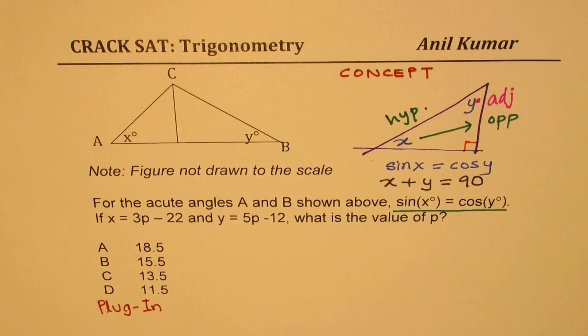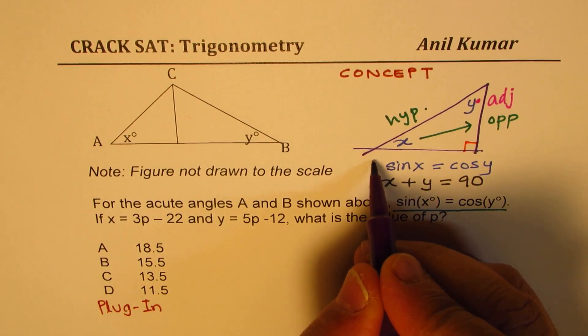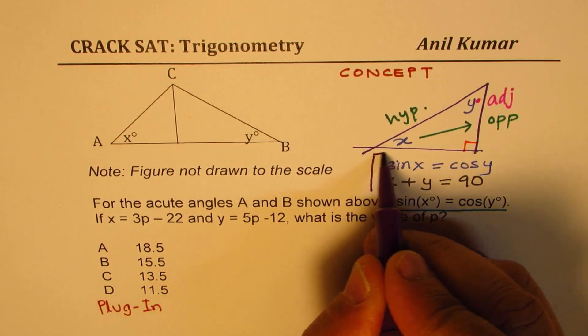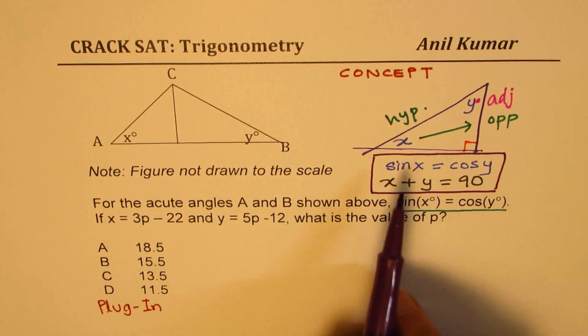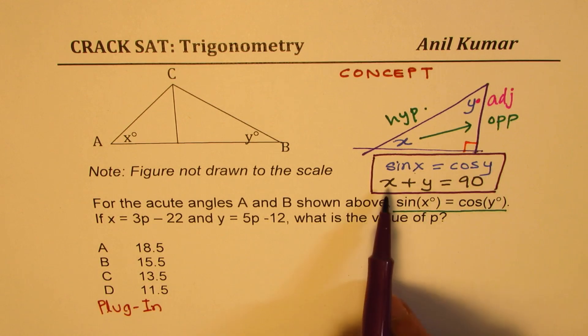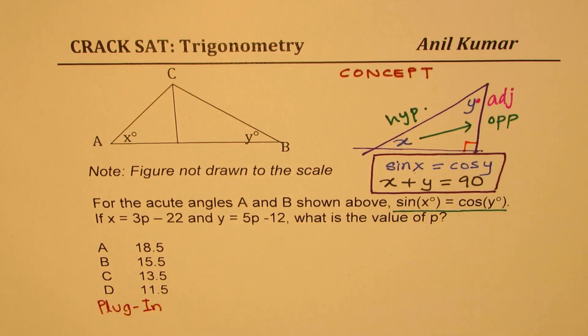How are x and y related? The relation is very simple. The sum of these two is 90 degrees. So the total is 180 in a right triangle. We always have x plus y equals 90. Now that becomes a very important equation, and this is going to always help you understand and solve such questions.